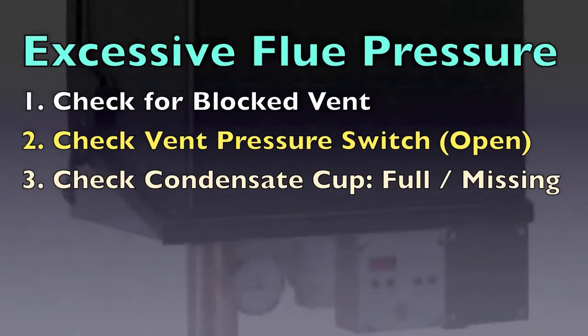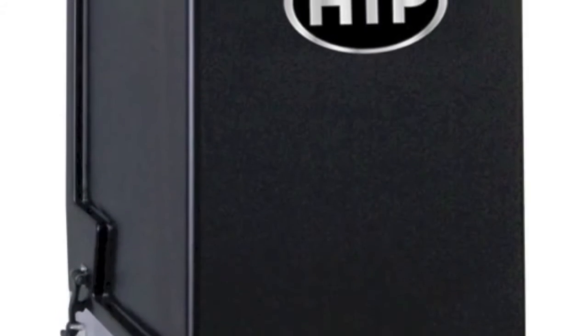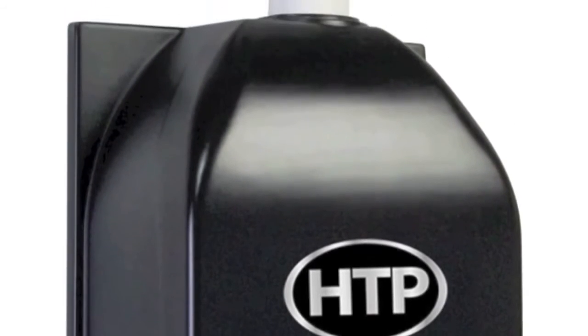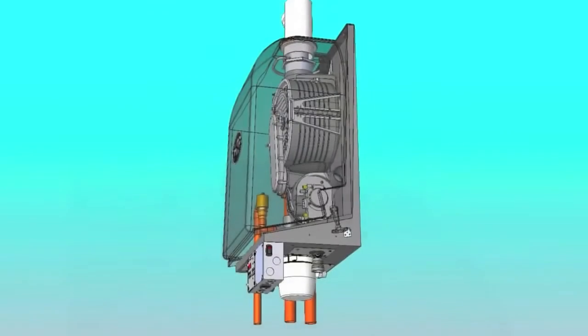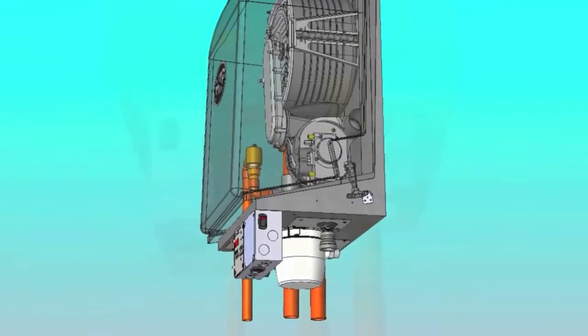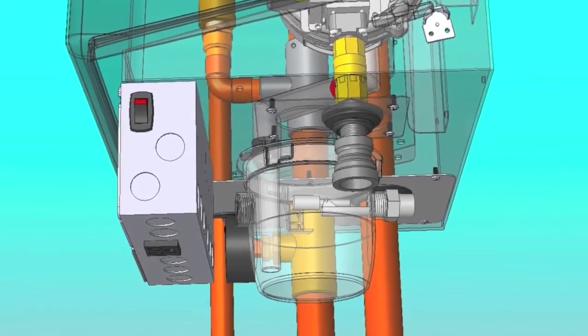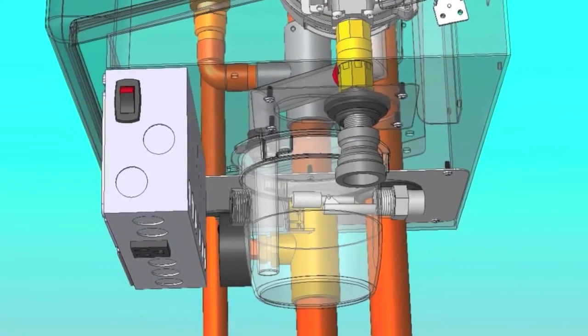If you are getting this code on the MC boilers, first check the vent for blockage, and also check the level of water in the condensate cup to assure that the float switch has not engaged. Also check that the engagement switch on the condensate cup is in the locked position.